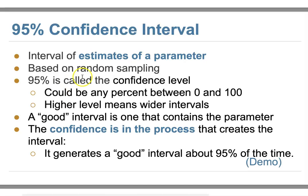A confidence interval is an estimate of a parameter based on a random sample. The 95% is called the confidence level, and from this confidence level we get the low and high bounds of the confidence interval. You can set the confidence level from 0 to 100%, but most of the time we use 95%. A higher confidence level means a wider interval — for example, at 99% confidence, only 1% falls outside the interval, so the interval must be wider.